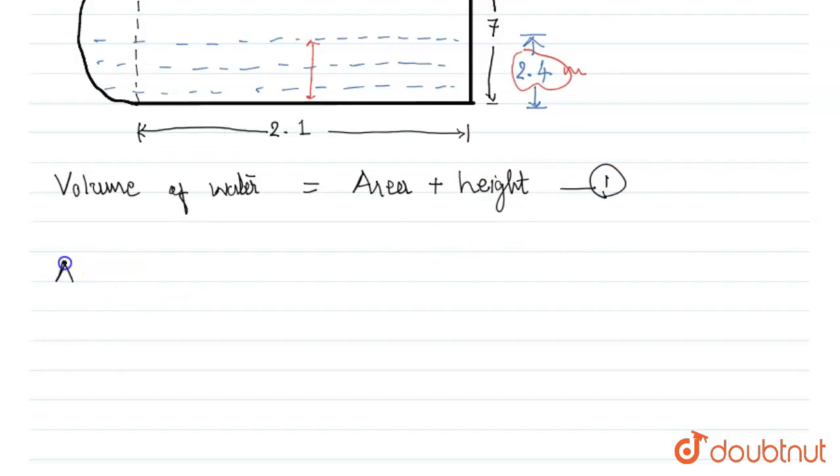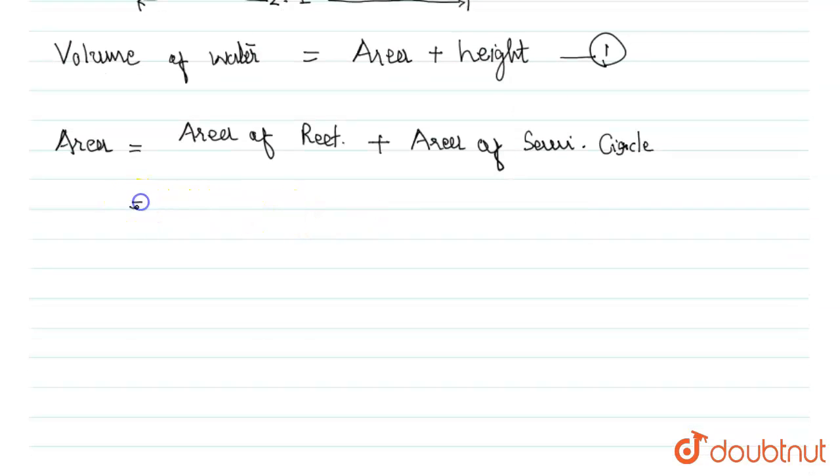The area of this tank is equal to area of rectangle plus area of semicircle, and that is nothing but the area of rectangle is L times B plus the area of semicircle is equal to one half pi r squared.